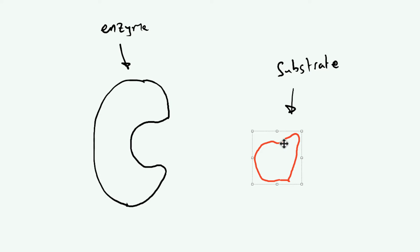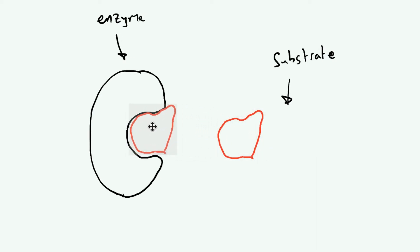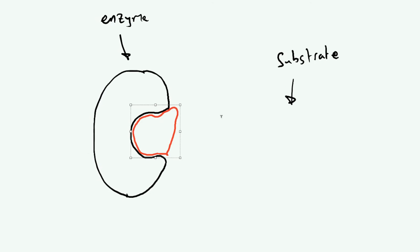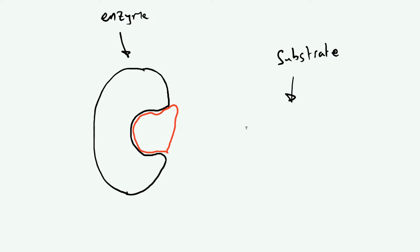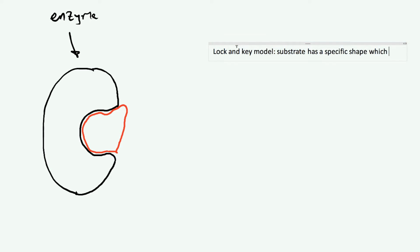There is a name for this model of substrate fitting inside the enzyme before it does its job, and that is the lock and key model. The lock and key model says the substrate has a specific shape which is complementary to the active site of the enzyme. Lock and key is exactly as it sounds — a key fits a specific lock, so a substrate fits a specific enzyme, fits in perfectly, reacts, and then leaves.